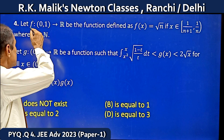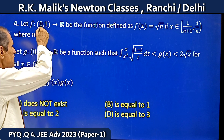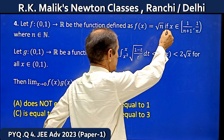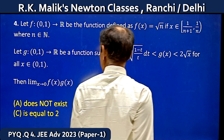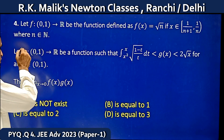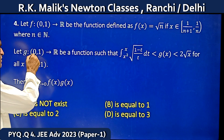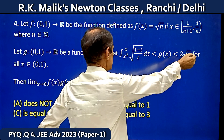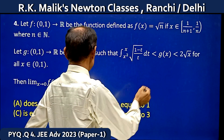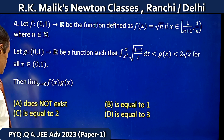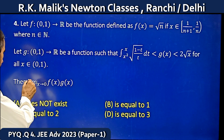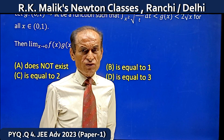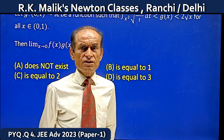In this question, it is given that let f take the interval [0,1] to ℝ be the function defined as f(x) = √n if x belongs to the interval [1/(n+1), 1/n], where n is a natural number. Let g take the interval [0,1] to ℝ be a function defined by a given expression for all x belonging to [0,1]. You have to find the limit as x tends to 0 of f(x)·g(x). Here I am going to use the squeeze theorem, which is also called the sandwich theorem.